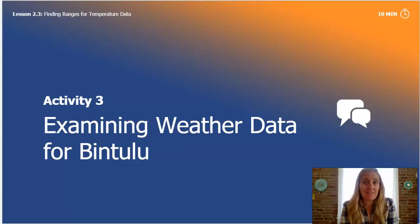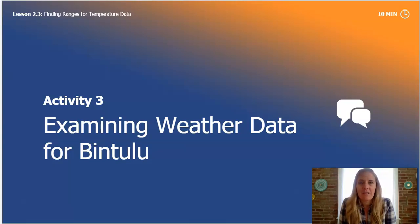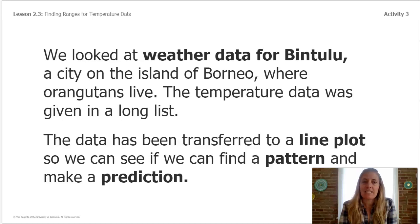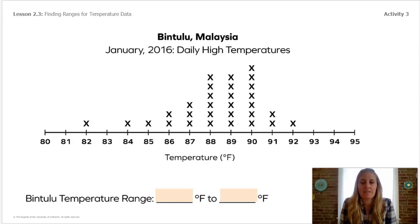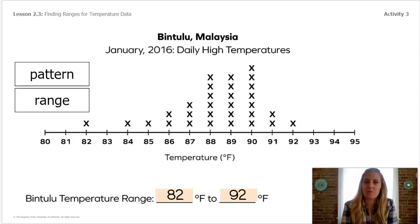Now we're going to move into the last part of our lesson, where we will look at the weather of Bintoulou — the city on the island of Borneo where our orangutans live. The temperature data was given in a long list, but it has been transferred to a line plot so that we can see if we can find a pattern and make a prediction. This line plot shows the same data we saw before, but displayed in a different way. What is the temperature range you notice? Find that lowest number and that highest number. We can see that in Bintoulou, Malaysia, the temperature range is 82 to 92 degrees Fahrenheit.